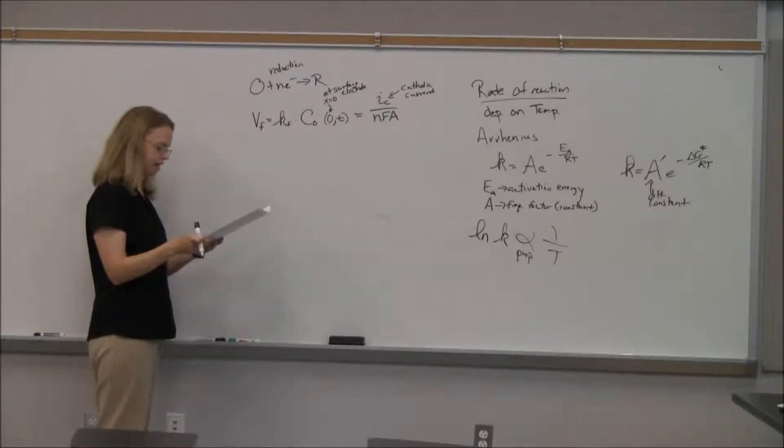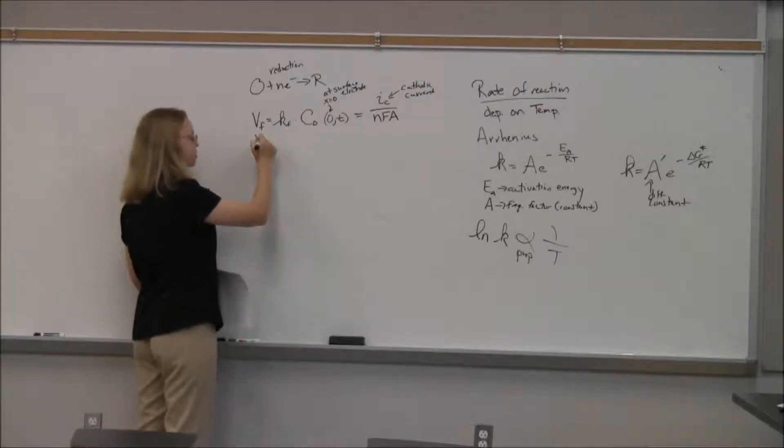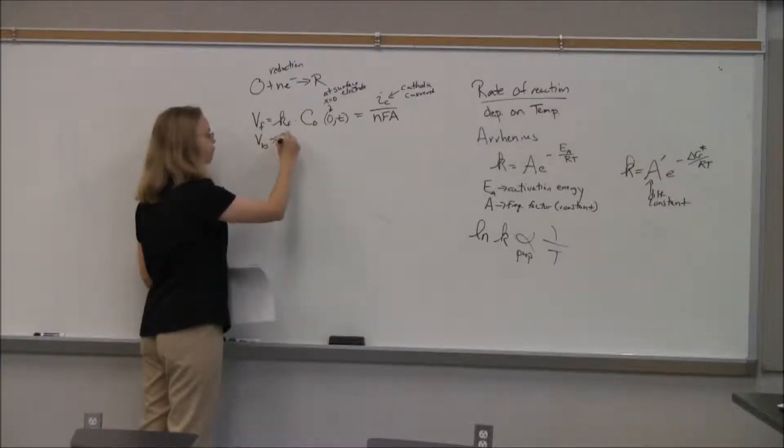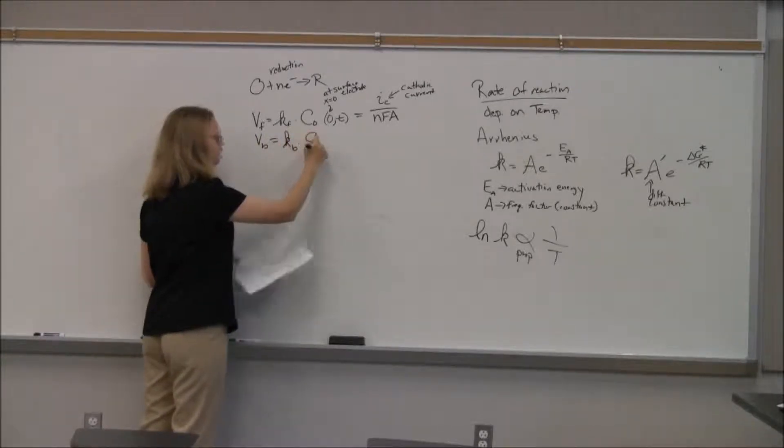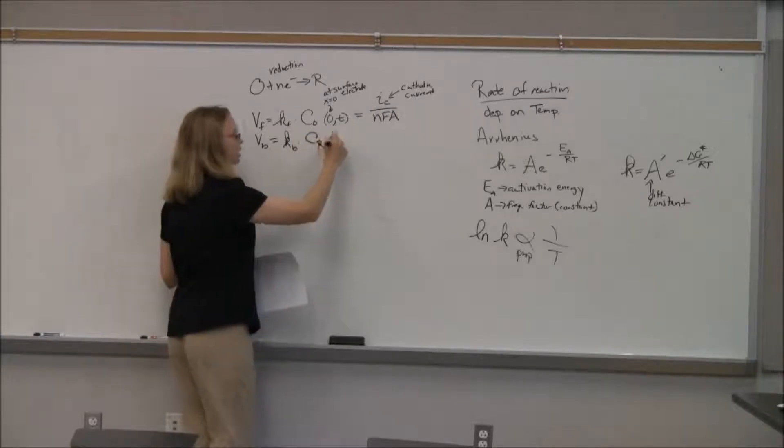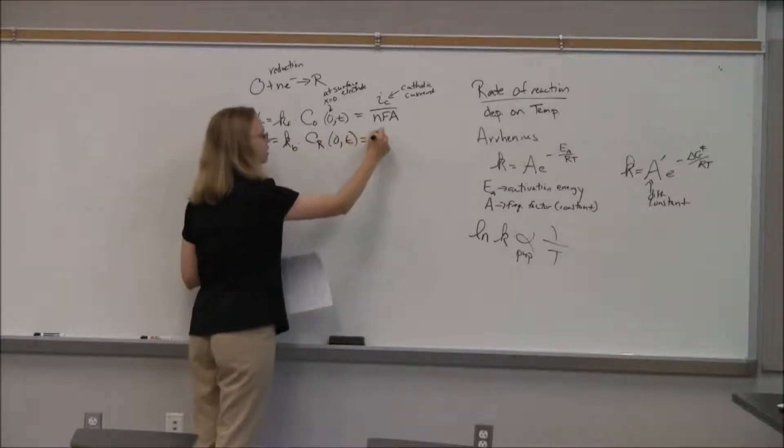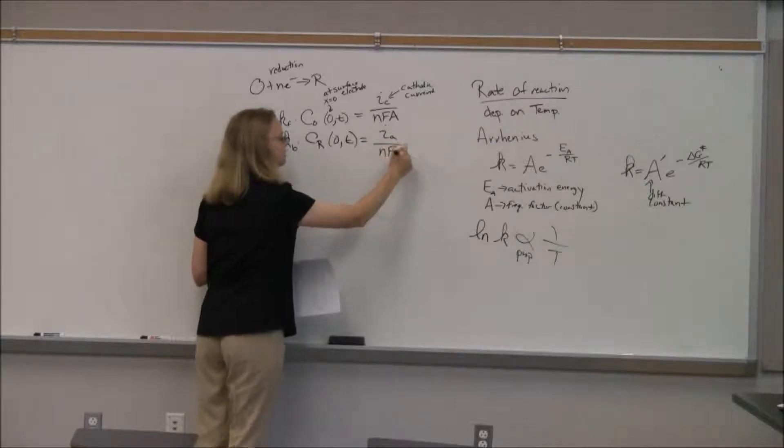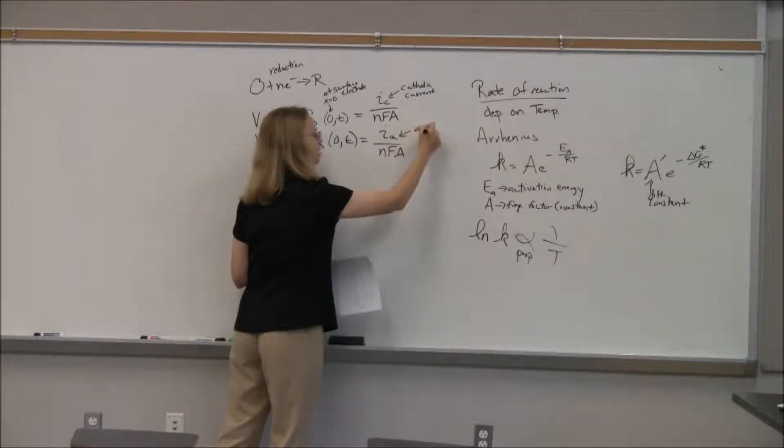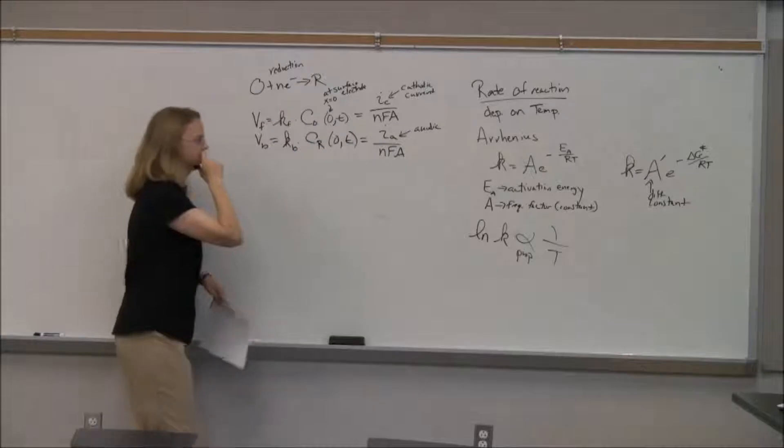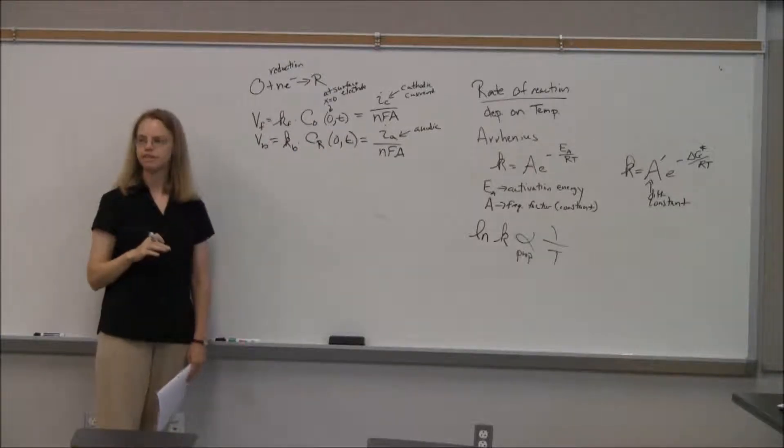So we could write this, I told you, I started off today by saying V is equal to I over NFA. We need that. So we have a V, and I know what current that is. That's the cathodic current. So I can write this is equal to Ic, the cathodic current over NFA.